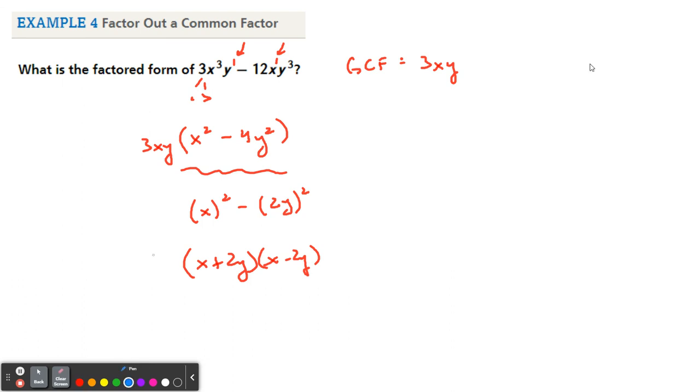Now, do not forget, very crucial. When you pull out a GCF, that has to go back in front, 3xy. Don't forget that. And this is your factored form.